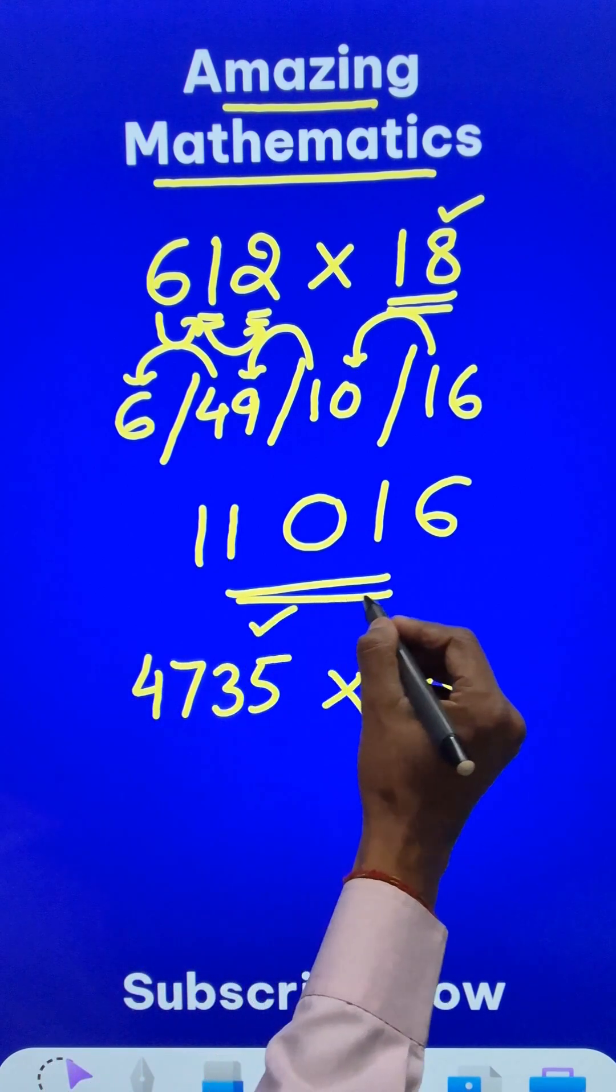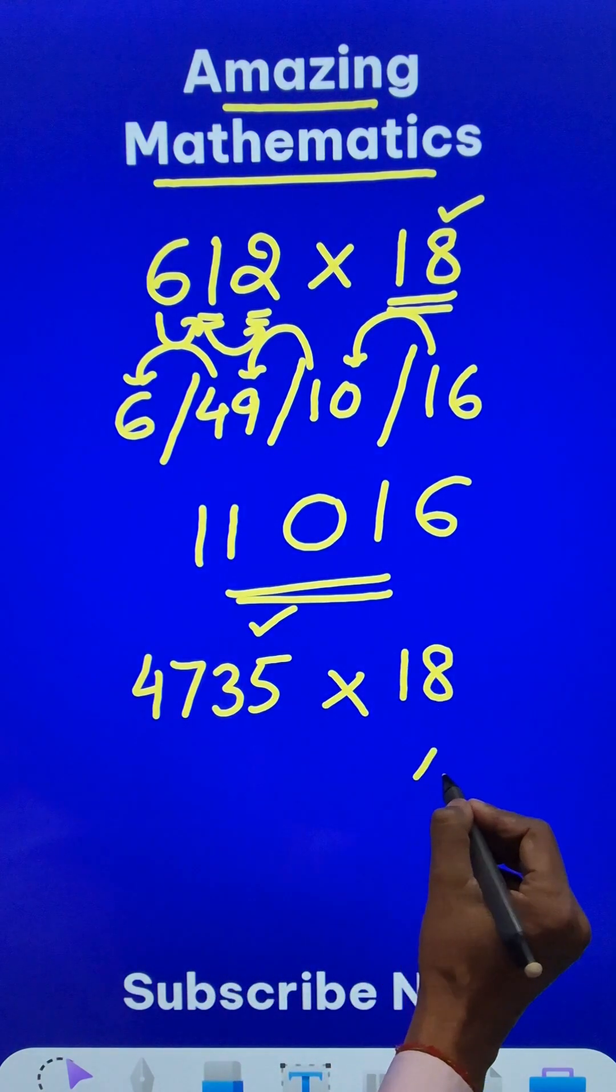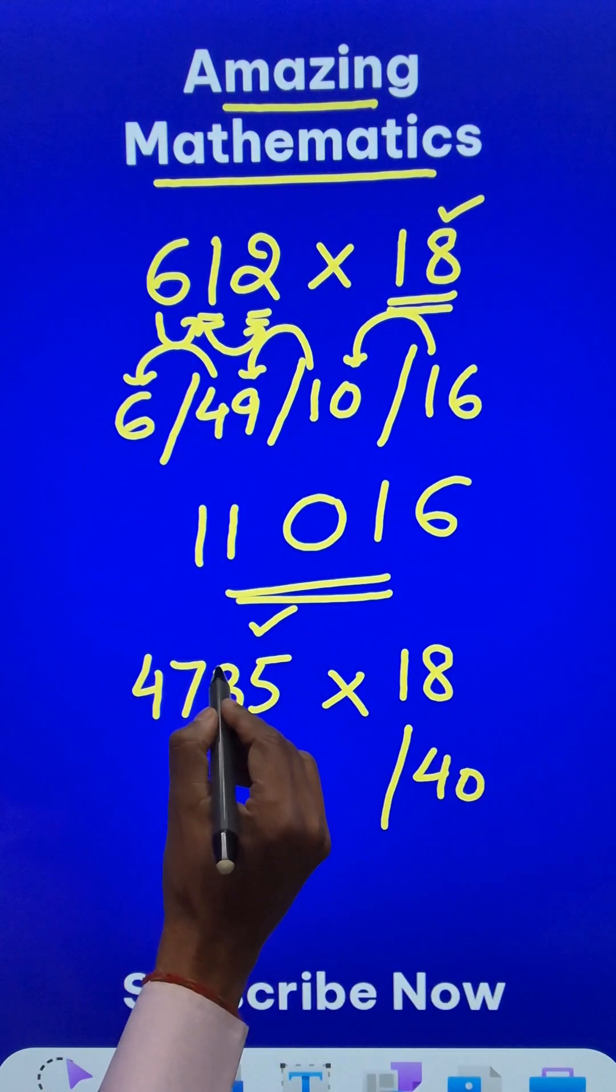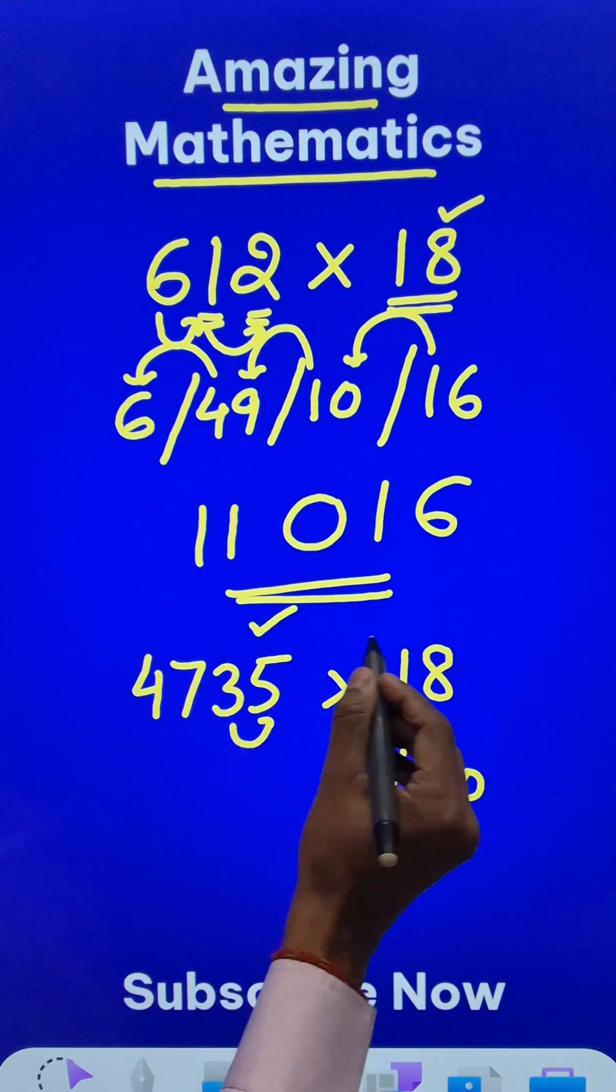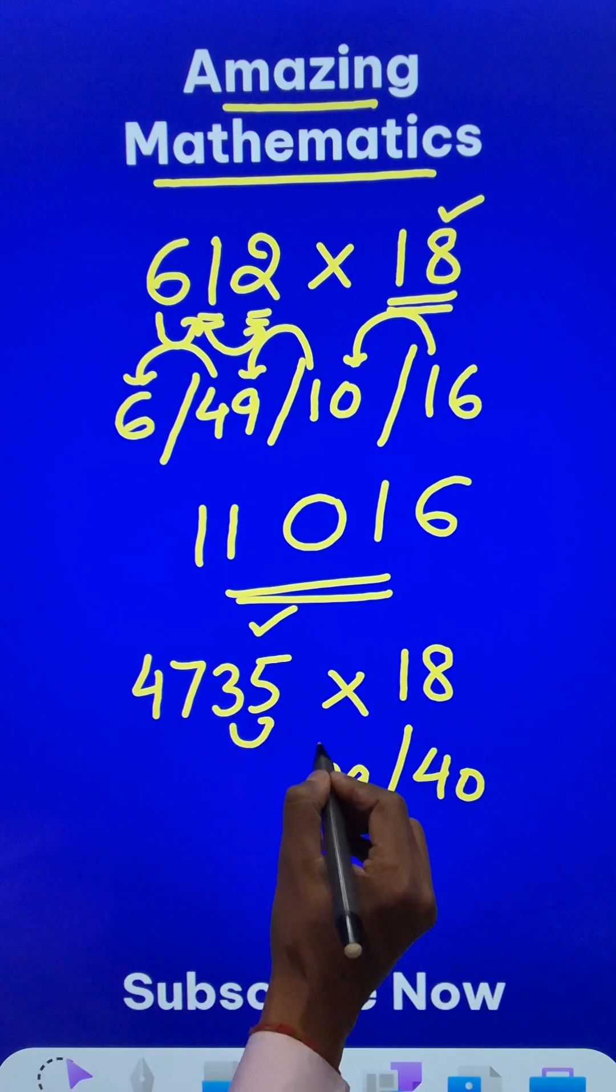Now start doing 5 times 8. 5 times 8 happens to be 40, and then 3 times 8 is 24. Add the next digit 5. You get 24 plus 5, 29. Likewise, carry on doing it.